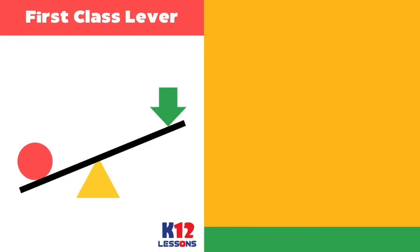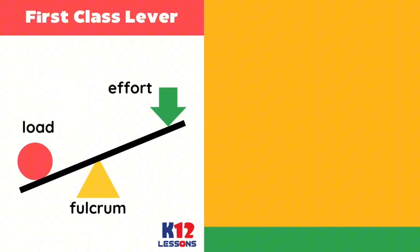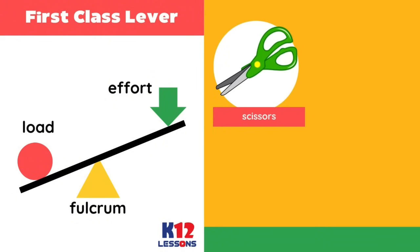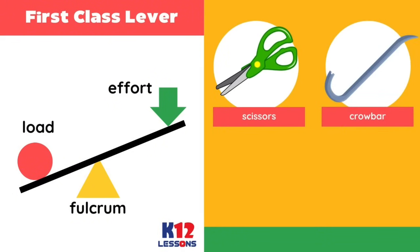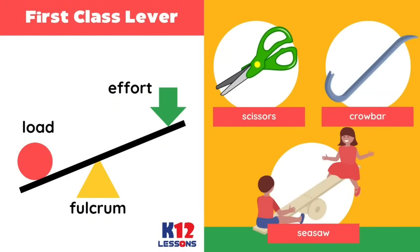First class lever: the fulcrum is located between the load and the effort. Examples: scissors, crowbar, and seesaw.